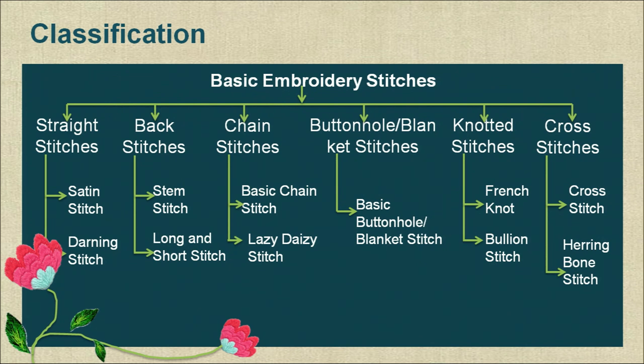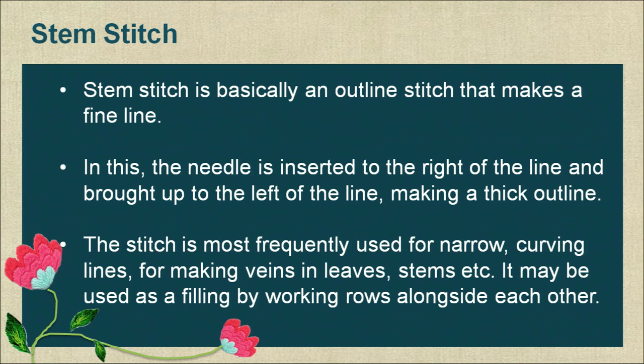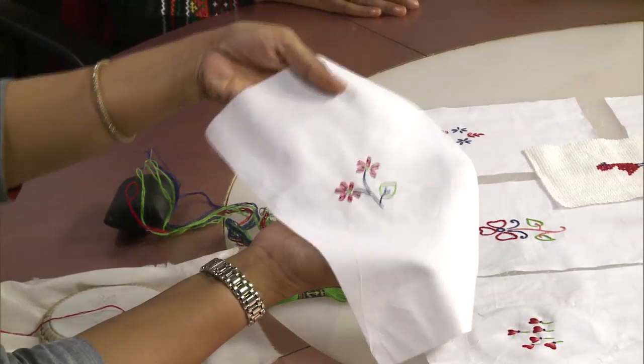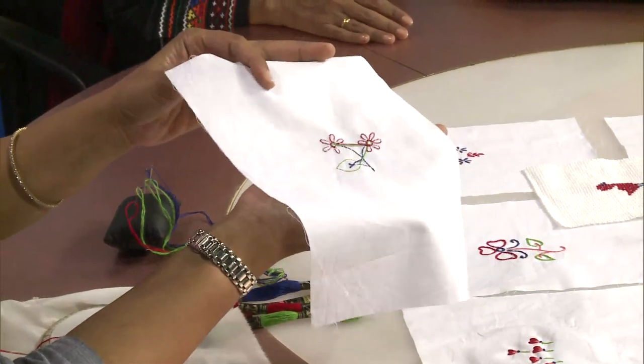Stem stitch is basically an outline stitch that makes a fine line. The needle is inserted to the right of the line and brought up to the left of the line, making a thick outline. It is most frequently used for narrow curving lines, for making veins in leaves, stems, etc. It may also be used as a filling by working rows alongside each other. Here is a sample of stem stitch — and if you see the back side, it is a row of back stitches.